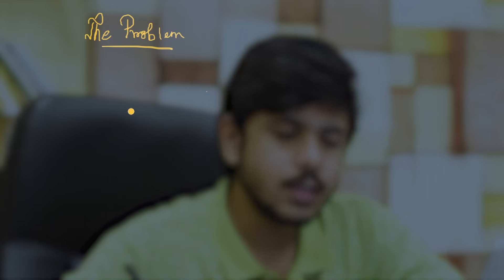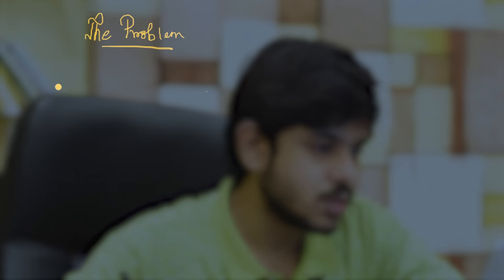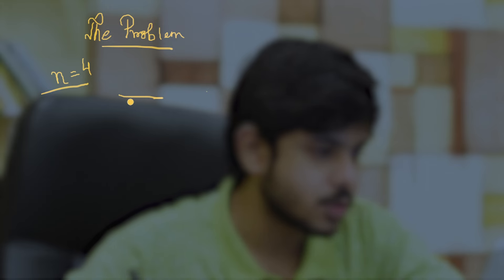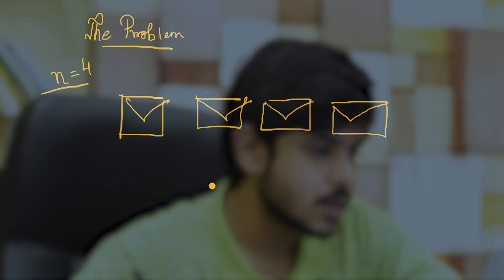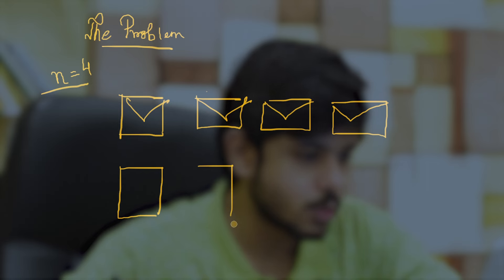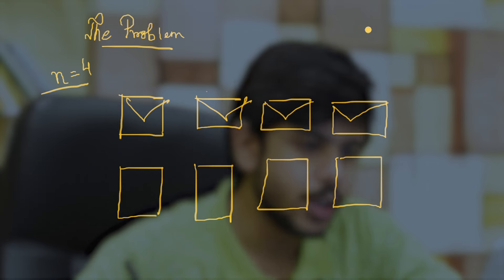So let's talk about the problem of misaddressed letters. Essentially, let's talk about a small sub-case. There are n letters and n envelopes. So let's say just for our assumption n is equal to four. So these are our four envelopes, and we also have four letters corresponding.